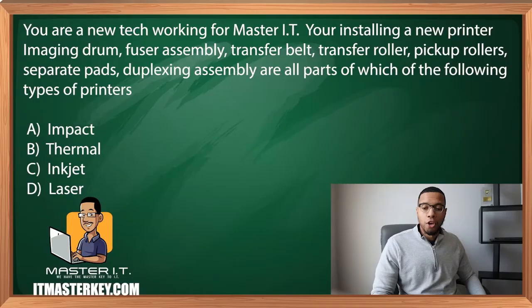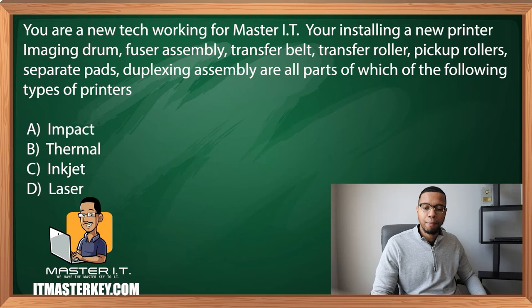You are a new tech working for Master IT. You're installing a brand new printer. This printer has an imaging drum, fuser assembly, transfer belt, transfer roller, pickup rollers, separate pads, and duplexing assembly. So what type of printer would have all those parts?